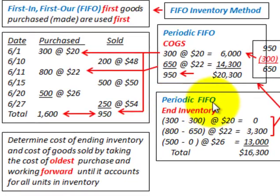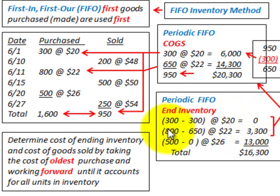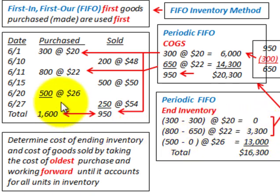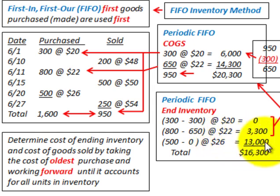For our ending inventory using periodic FIFO: we used up the total 300 units at $20, so nothing remains in ending inventory for that first group. For the 800 units purchased, we used 650, leaving 150 remaining at $22 a piece — that gives us $3,300. Then the 500 units purchased, we didn't use any of those, so 500 units at $26 a piece equals $13,000. Total ending inventory is $16,300.